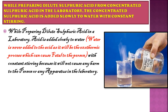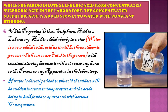With constant stirring, no harm is caused to the person or apparatus in the laboratory. While preparing dilute sulfuric acid (H₂SO₄), acid is slowly added to water with constant stirring so that a favorable reaction takes place. If water is directly added to acid, there will be a sudden increase in temperature — more heat is produced — and the acid in bulk tends to spurt out with serious consequences. Always remember this while preparing dilute sulfuric acid from concentrated acid.